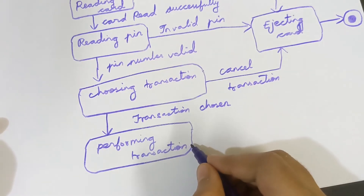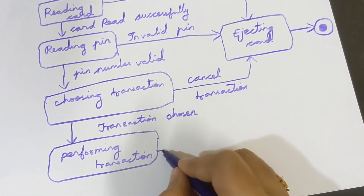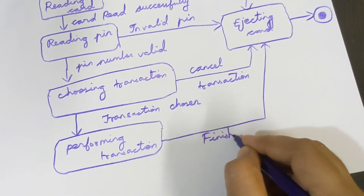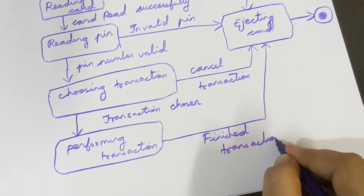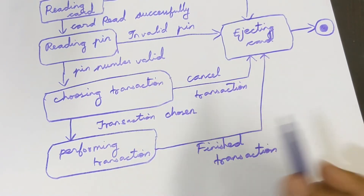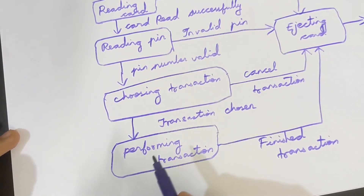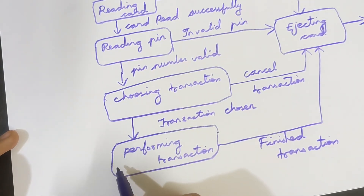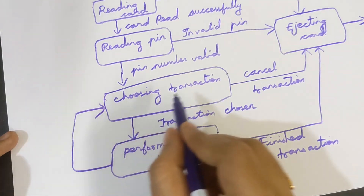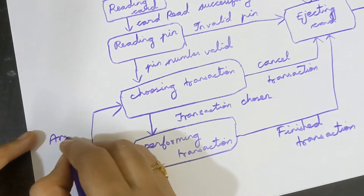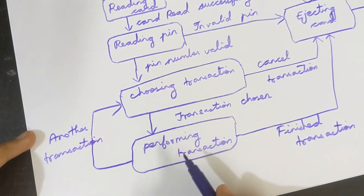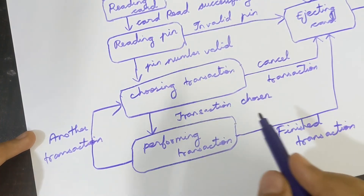After performing the transaction, the state changes from Performing Transaction to Ejecting Card due to the event 'Finished Transaction,' and the process ends there. However, if you want to perform another transaction, the state changes from Performing Transaction back to Choosing Transaction when the event 'Another Transaction' occurs, allowing you to select a new option.